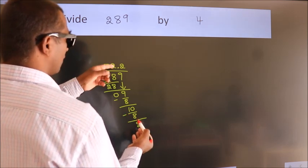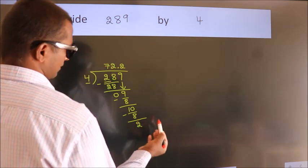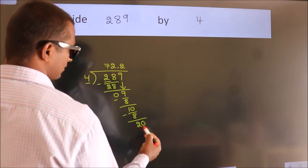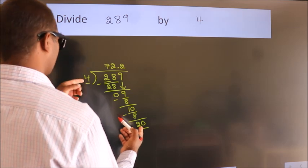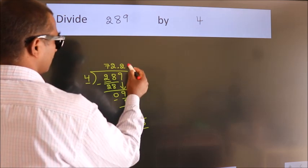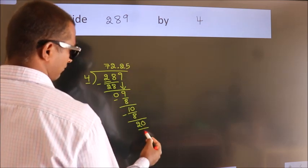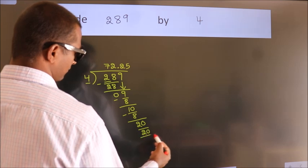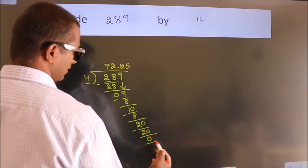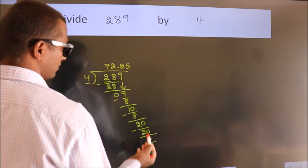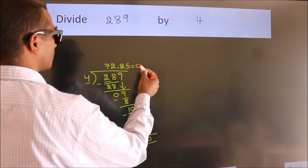After this we already have the decimal, so directly take 0. So 20. When do we get 20 in the 4 table? 4 times 5 is 20. Now we subtract and get 0. We got remainder 0, so this is our quotient.